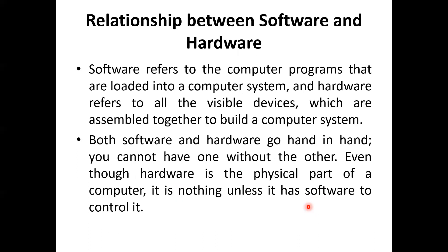Software refers to the computer programs that are loaded into the computer system, and hardware refers to all the visible devices that are assembled to build a computer system. Both hardware and software work simultaneously — it is not that software works separately and hardware works separately. Hardware is nothing unless there is software to control it, and similarly, if there is no hardware, the software has nothing to control. So hardware and software both work together.